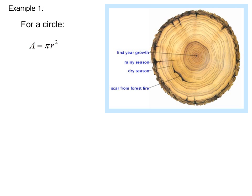Example 1. For a circle, A equals pi r squared. dA dr equals d dr pi r squared. That is, we took the derivative of both sides with respect to r. dA dr equals 2 pi r.